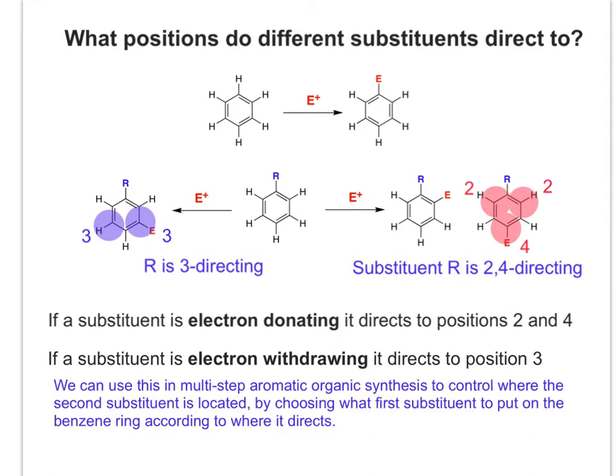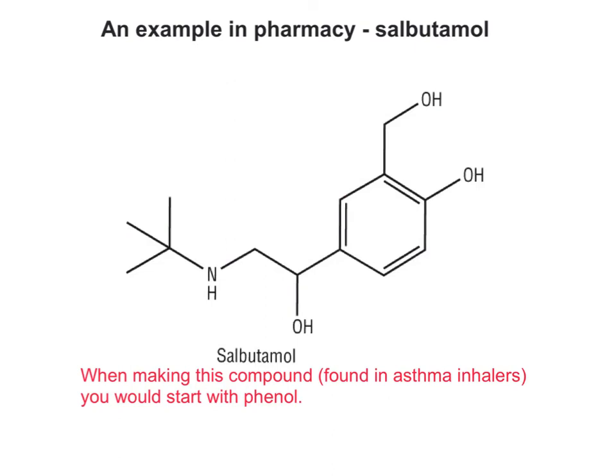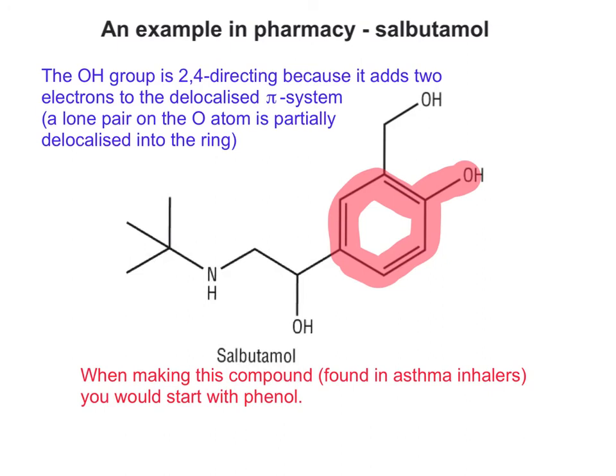We can use this idea in multi-step aromatic organic synthesis to control where the second substituent ends up, by choosing what first substituent to put on the benzene ring according to where it directs. When making salbutamol, which is found in asthma inhalers, you would start with phenol. The OH group is 2,4-directing because it adds electrons to the delocalised pi system - and if you number the benzene ring you can see the substituents are on positions 2 and 4.